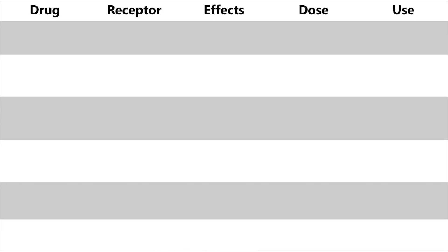Now let's get into the medications themselves. Starting with vasopressors, the most common one used is norepinephrine. This hormone acts on both alpha-1 and beta-1 receptors, causing a dual effect of vasoconstriction and an increase in cardiac output. The usual dose range is up to 0.3 micrograms per kilogram per minute. It's most commonly used as first-line therapy in septic shock, because septic shock causes inappropriate vasodilation and we need to increase systemic vascular resistance.